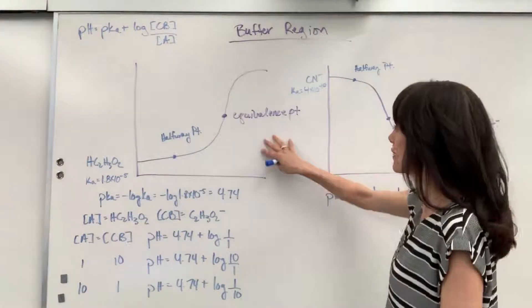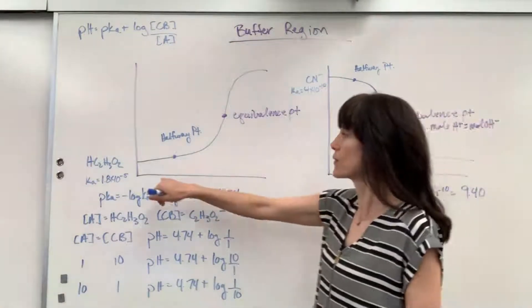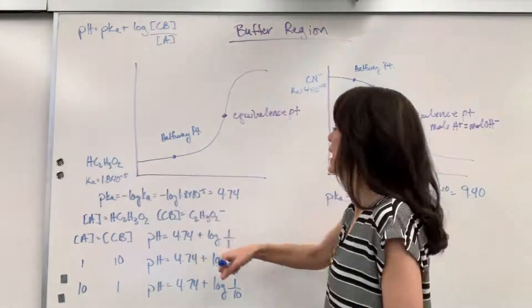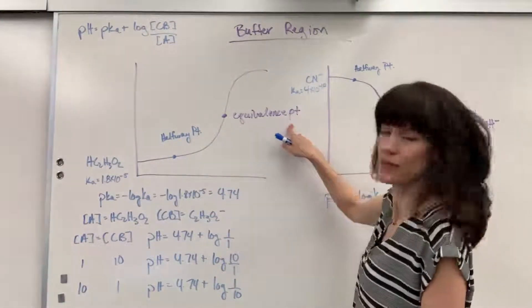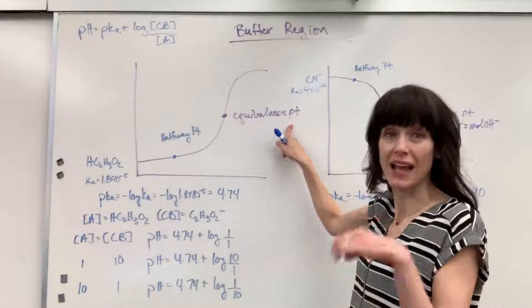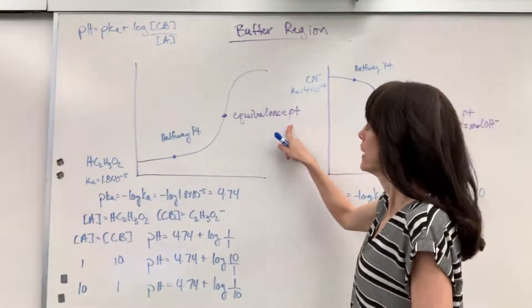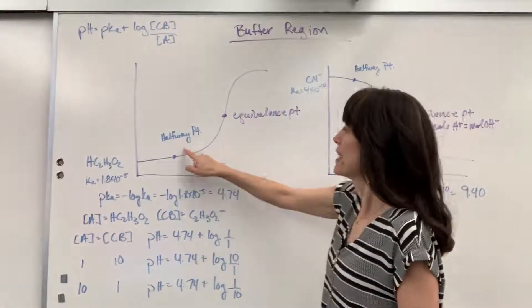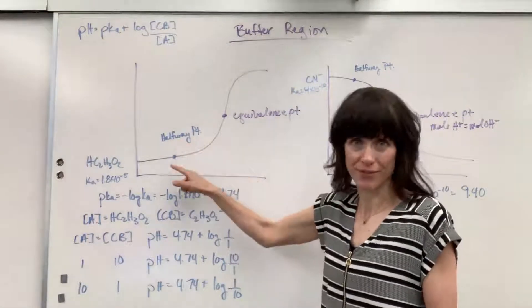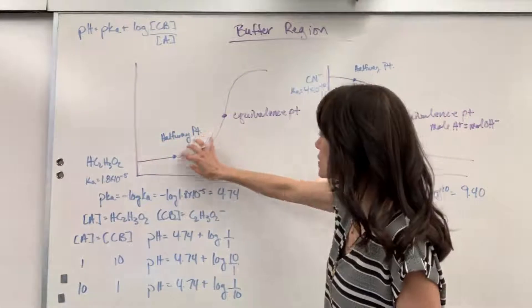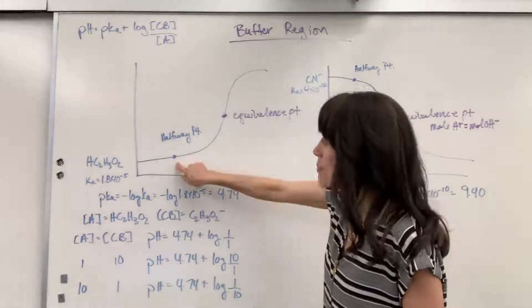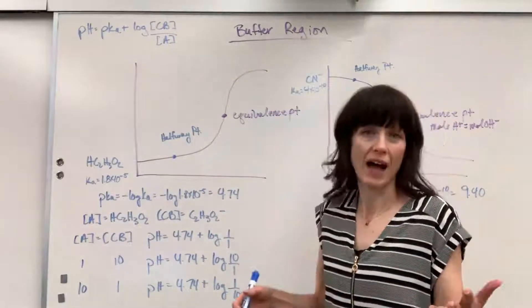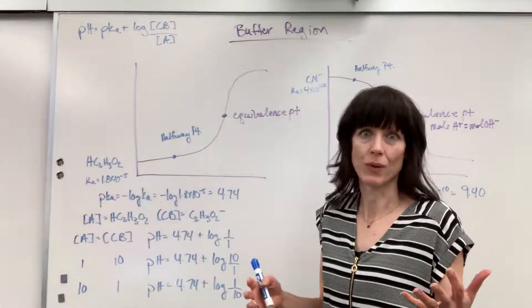Quick reminder — here we have our titration curve. This is going to be a weak acid titrated by a strong base. Right here is our equivalence point, where the moles of the acid equal the moles of the base — moles of hydrogen equal moles of hydroxide. This whole region is our buffer region, and that point is really special. That's the halfway point, also called the half-equivalence point, ideal buffer, or midway point.